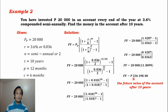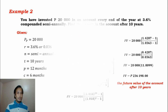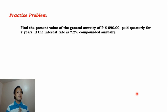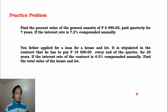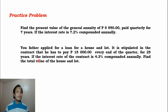Multiplying 11.899 by 20,000 gives 236,198 pesos. This is the future value of the account after 10 years. Before closing, let us have these practice problems. Number one: find the present value of the general annuity of 5,590 pesos paid quarterly for 7 years. Number two: your father applied for a loan for a house and lot, stipulated in the contract to pay 15,000 pesos every end of the quarter for 25 years, at an interest rate of 4.3% compounded annually — find the total value of the house and lot.